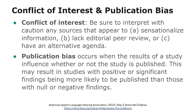Publication bias occurs when the results of a study influence whether or not the study is published. Unfortunately, studies with positive or significant findings are more likely to be published than those with null or negative findings. This means that when you look at the literature on a topic, you might be seeing more positive or significant findings simply because studies with null or negative findings were not published as frequently. This provides a skewed image of the topic, so be aware that this could be happening when you look at the literature.